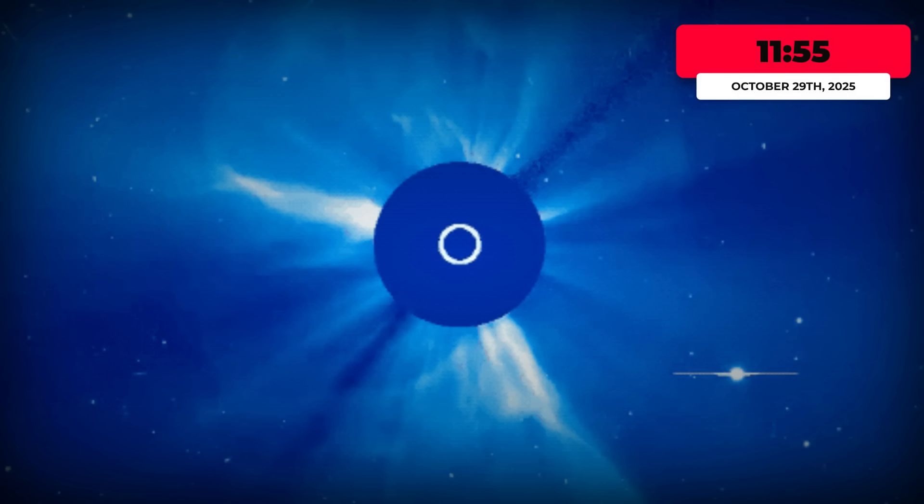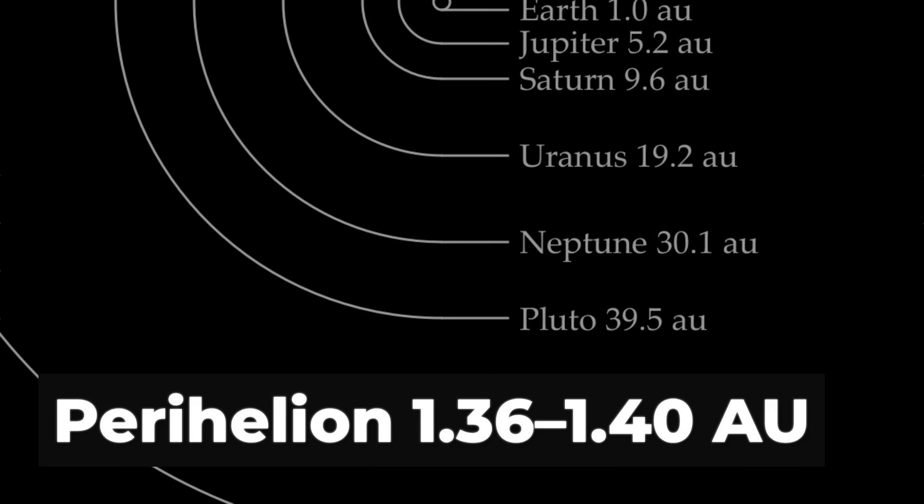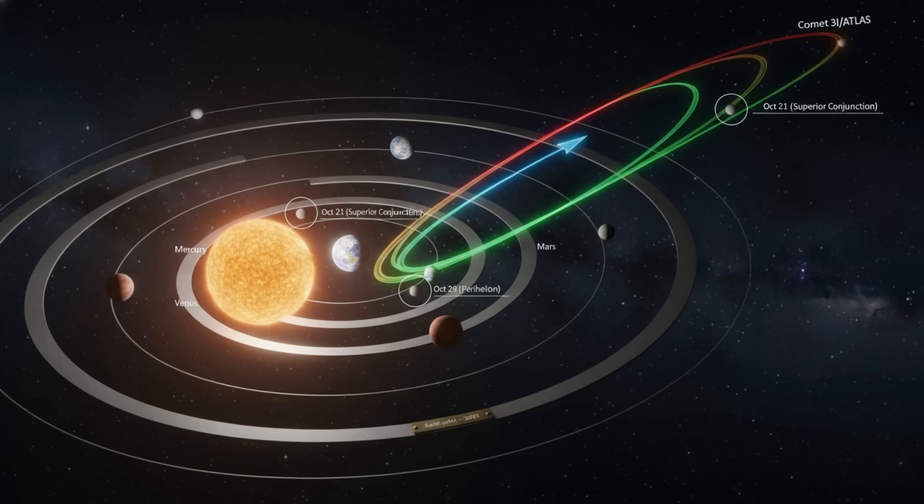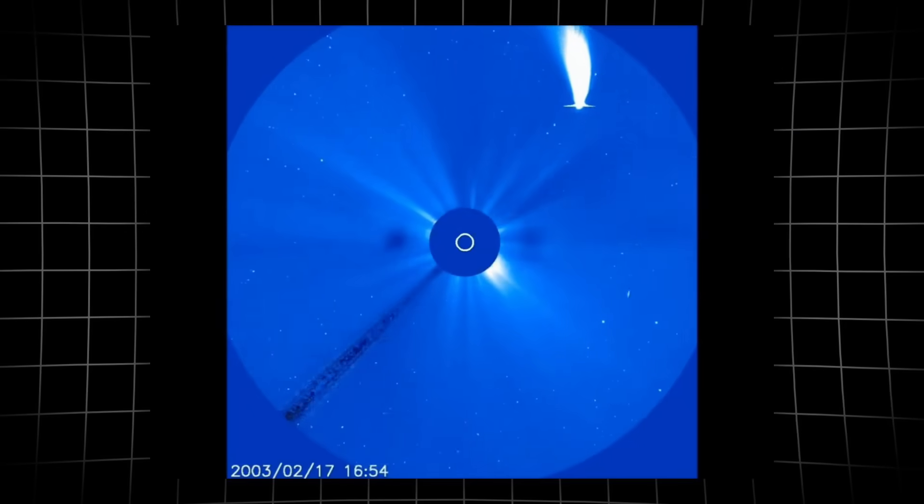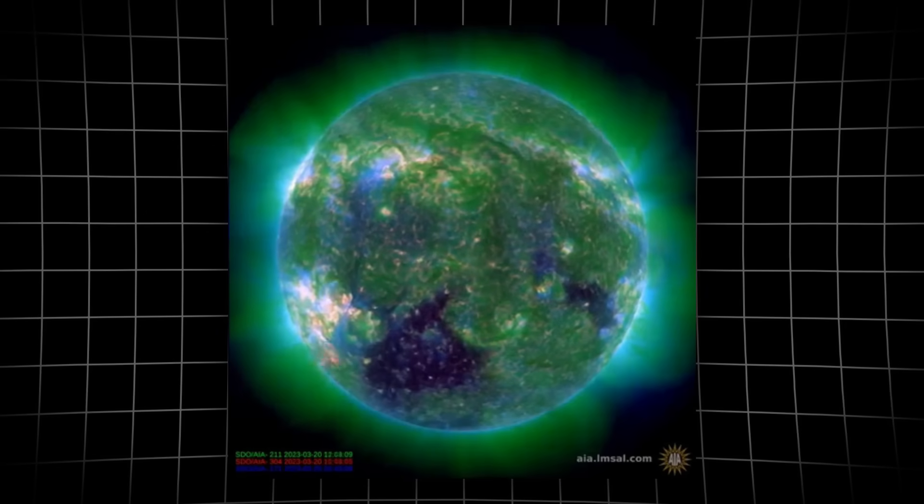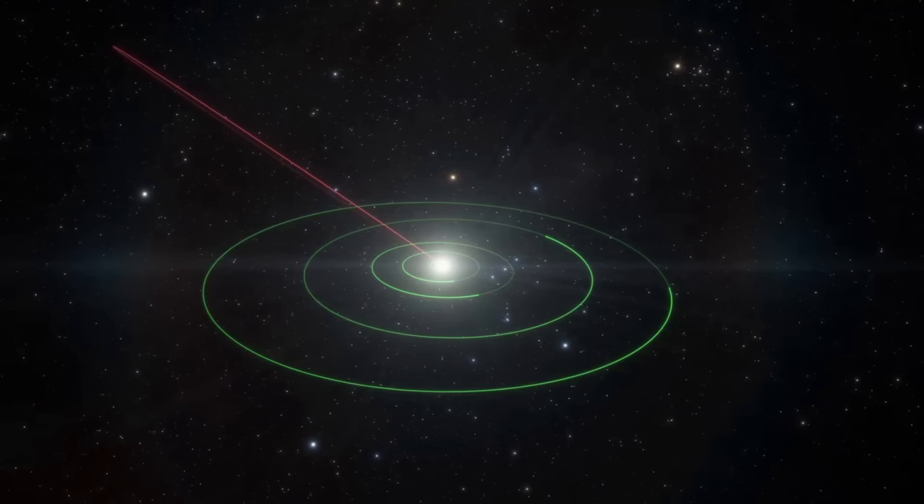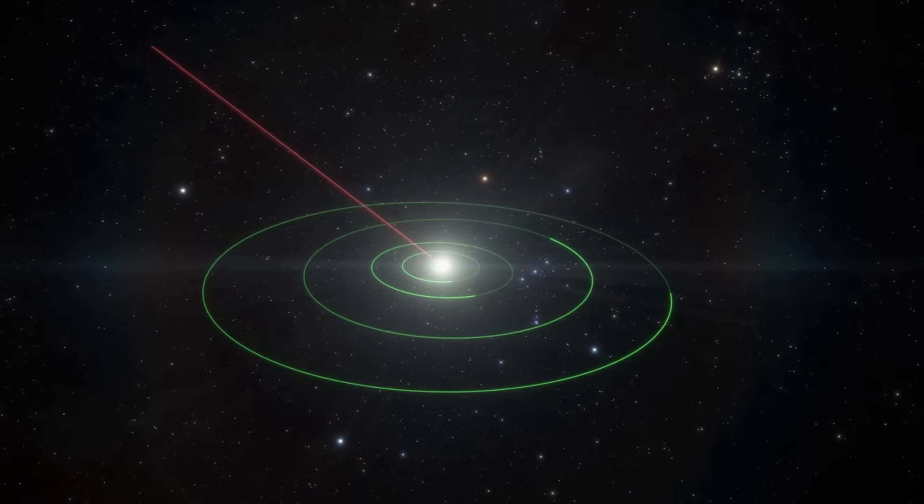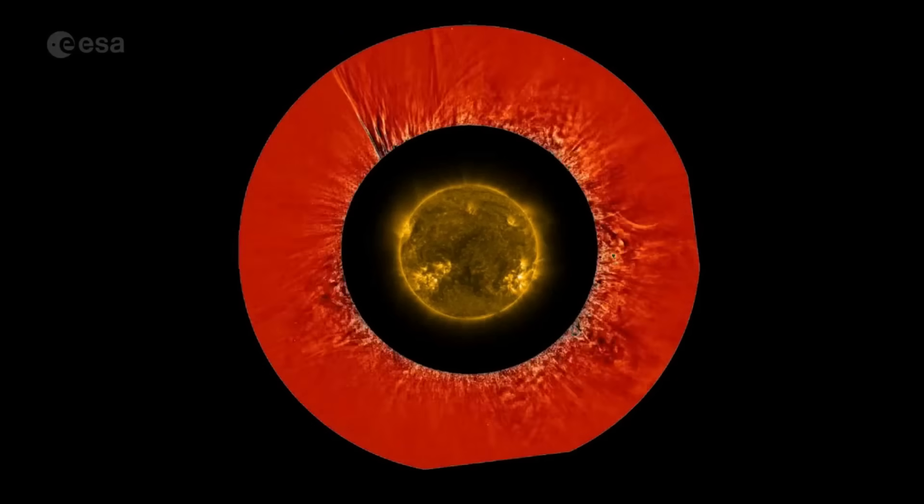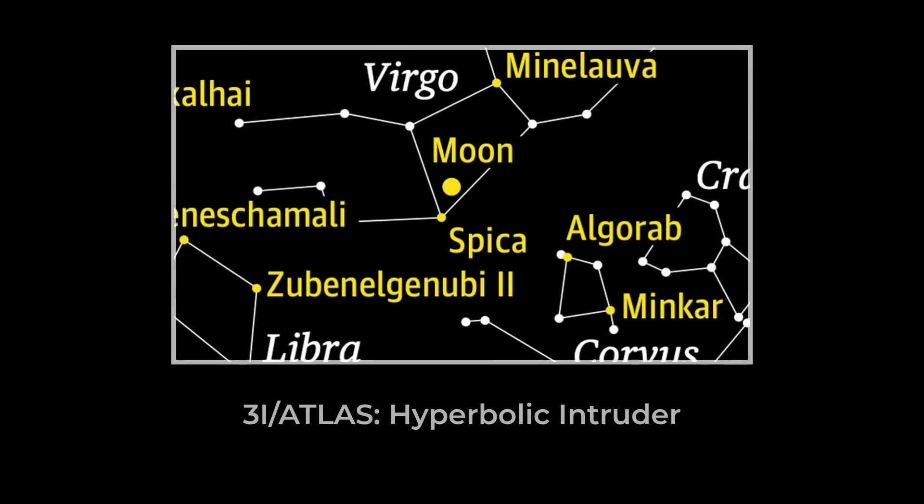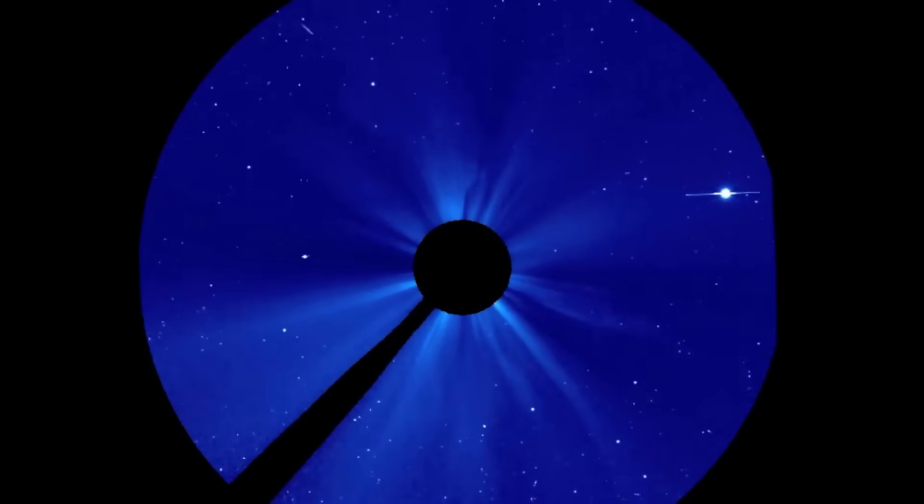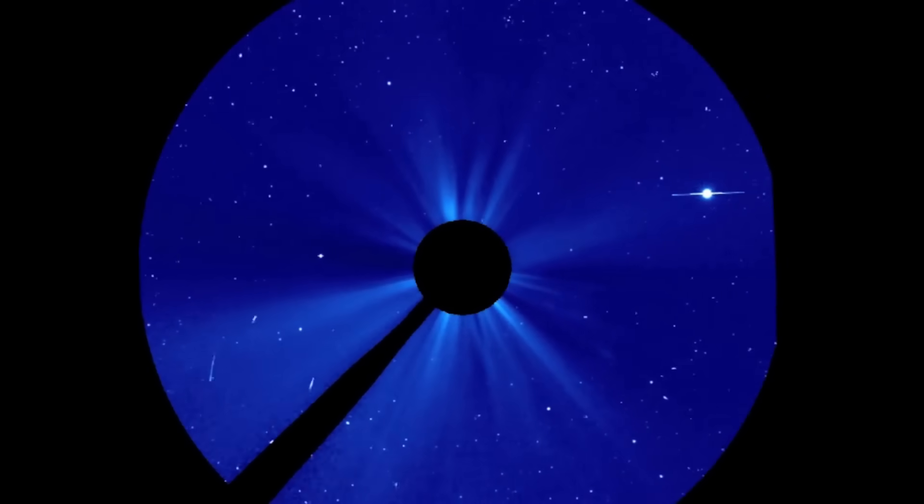Perihelion arrives on October 29th at 11:55 UTC. The closest approach to the Sun will occur at about 1.36 to 1.40 AU, just inside the orbit of Mars, yet still well beyond Earth's own path. Unlike the sun-grazers that flirt with destruction, this visitor will not dive into the solar corona. Instead, it skirts the boundary of the inner system, threading a course through the region where solar wind and electromagnetic fields reach their most turbulent. The geometry places it in the constellation Virgo at closest approach, but from Earth's perspective, the Sun's glare will render it completely invisible.